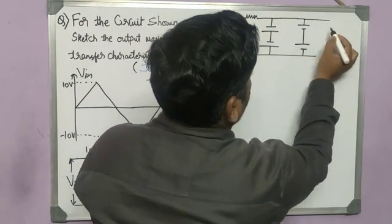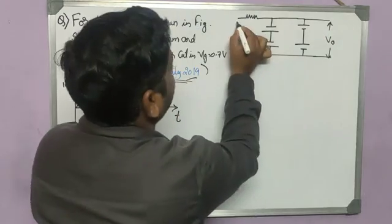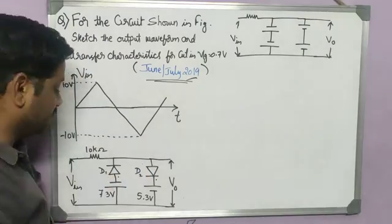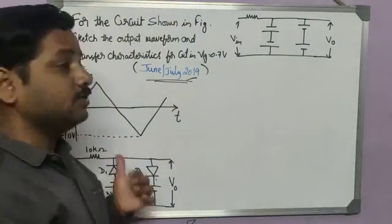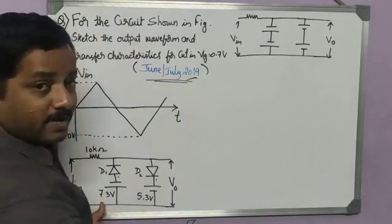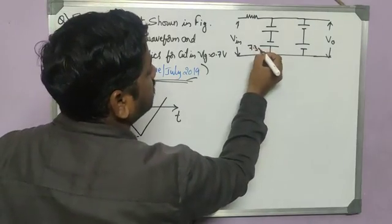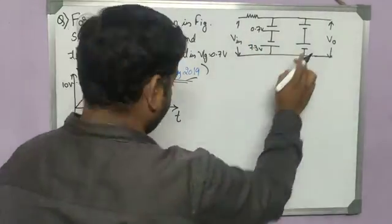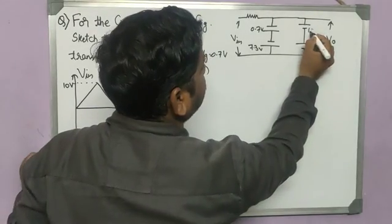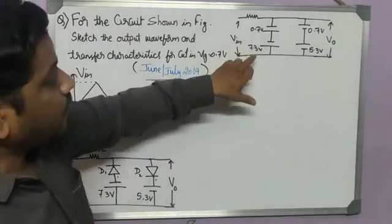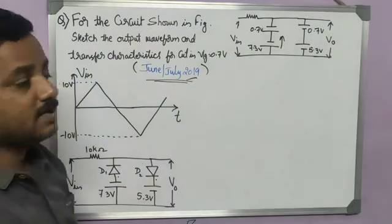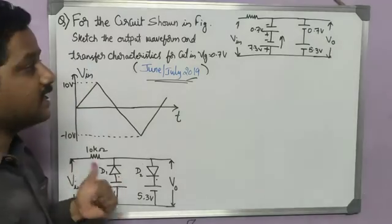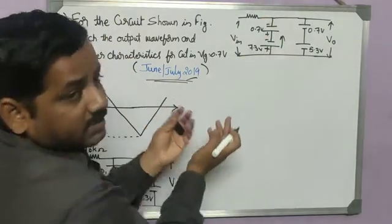This is the output terminal. After getting this equivalent circuit, we can easily identify the voltages at the two points. We read the voltages in the appropriate direction — plus to minus or minus to plus — and get the summation. So I can say the voltage at this terminal is determined by reading the polarity: plus to minus gives negative values, minus to plus gives positive values.